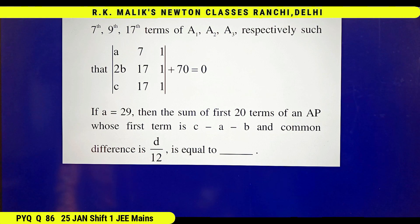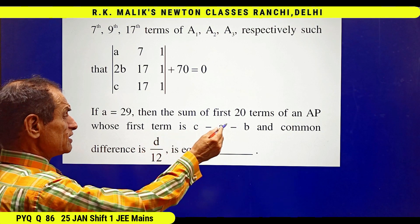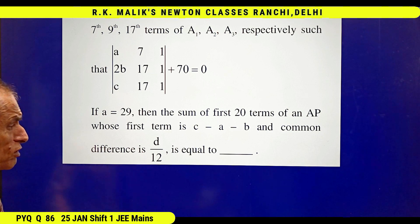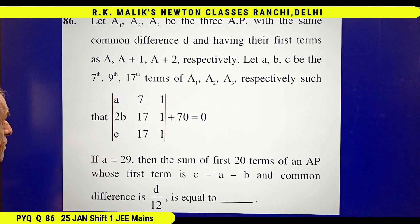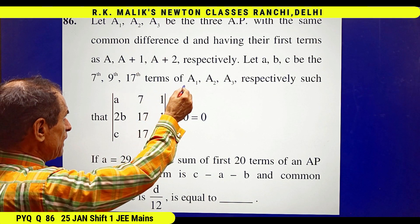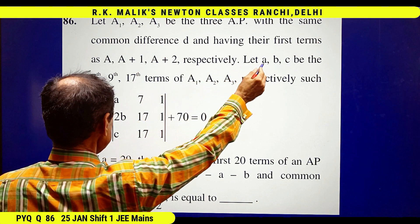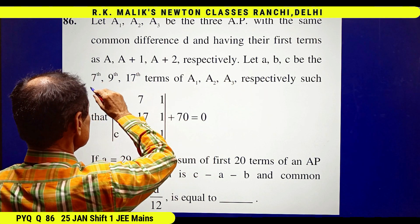From the question it is clear that once c, b, and D are found, you can find the sum of 20 terms very easily. According to given information, for the AP A₁, a is the 7th term.